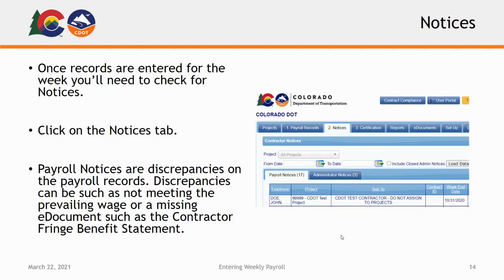Once you've entered your records for the week, you will need to check for notices. Click on the Notice tab. You'll want to make sure you don't have any payroll notices, otherwise you cannot certify your payroll records until the notices have been cleared. Payroll notices would be discrepancies on the payroll records, such as not meeting the prevailing wage or something missing from your e-documents, such as the Contractor Fringe Benefits Statement. Once you clear the payroll notices, you will be able to certify your payroll records. In another tutorial, we will cover how to certify your payroll records.